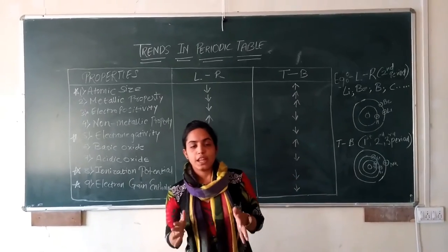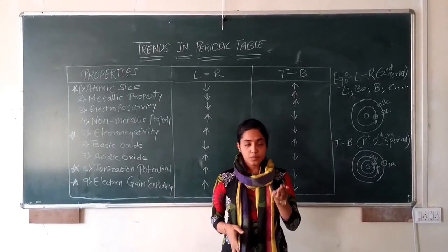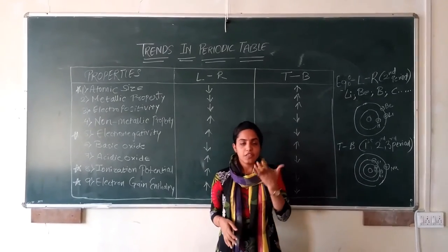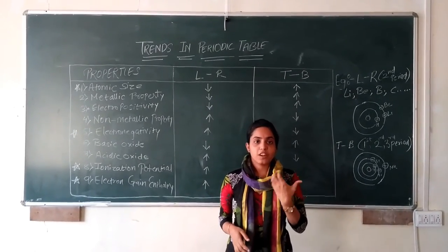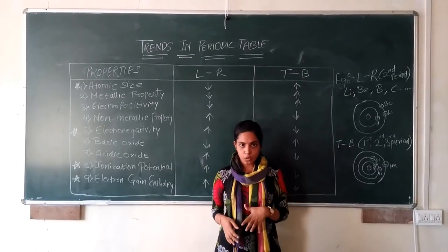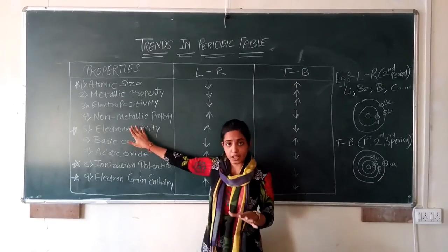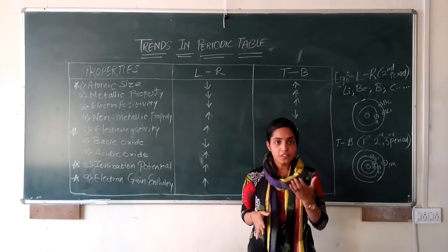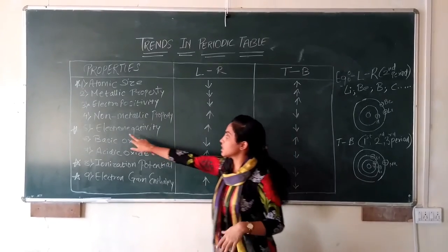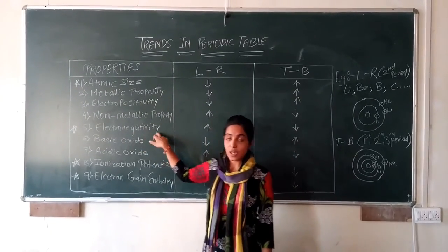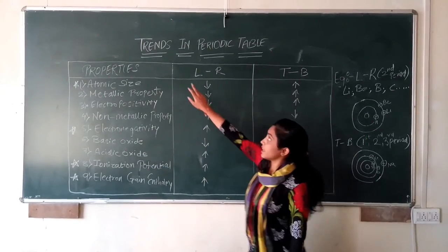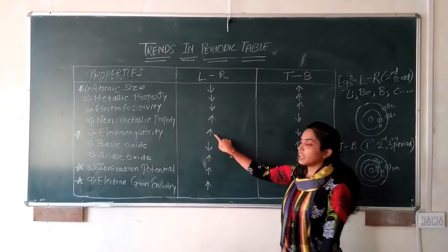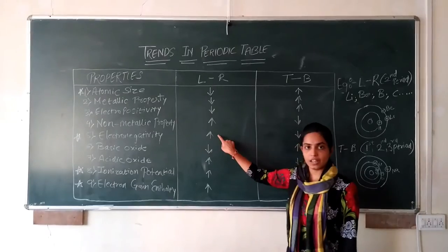Next is electronegativity. Electronegativity is the tendency of an atom to attract electrons. In the trends, from left to right, electronegativity increases.